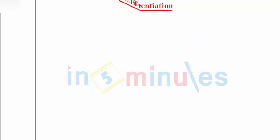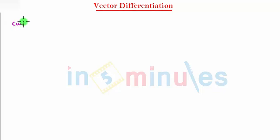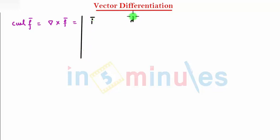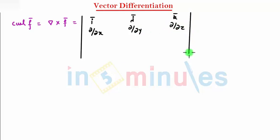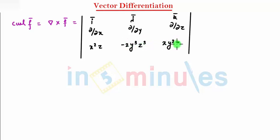Let's start with curl. Curl f̄ is del cross f̄. I need to find the determinant with î, ĵ, k̂ in the first row; ∂/∂x, ∂/∂y, ∂/∂z in the second row; and f1 = x²z, f2 = -2y³z², f3 = xy²z² in the third row.